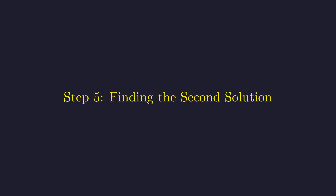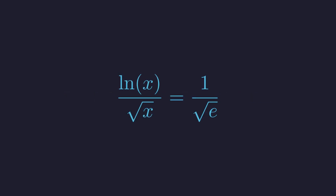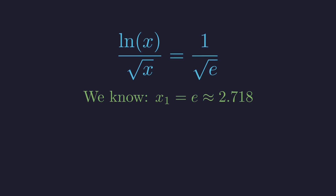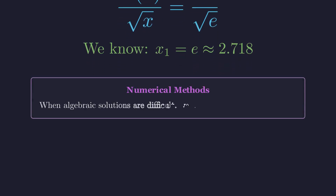Now let's determine the exact value of that second solution. Recall our equation — we need to find all values of x that satisfy this relationship. We already confirmed that our first solution is x equals e, approximately 2.718. For the second solution, the equation cannot be solved algebraically. This is where numerical methods become essential.